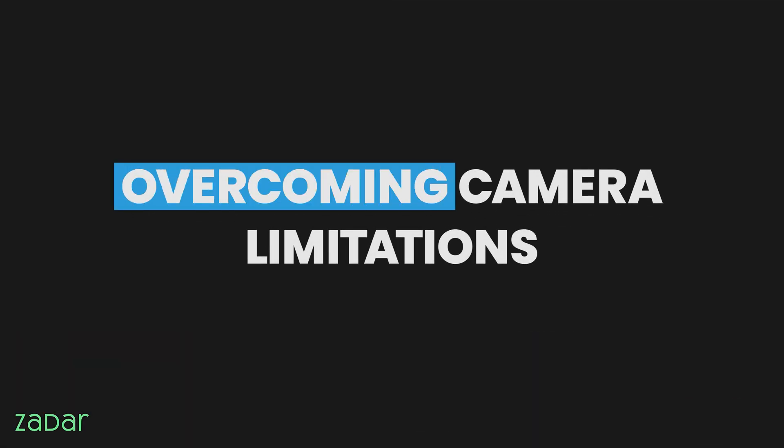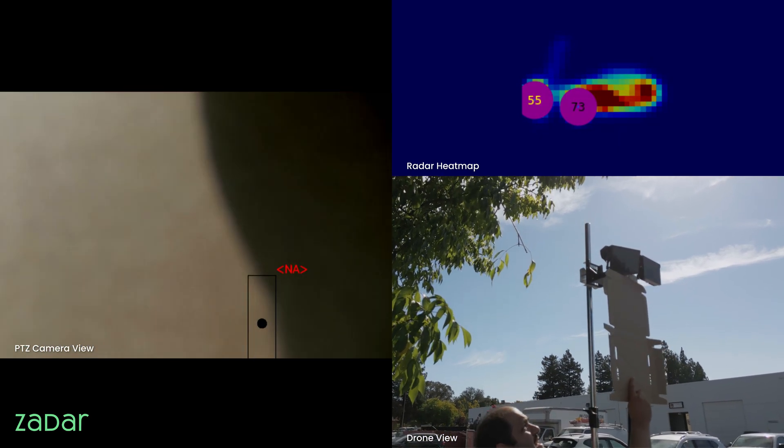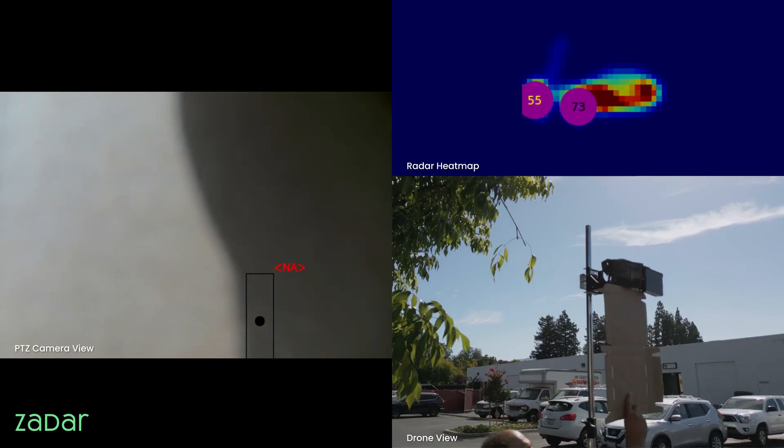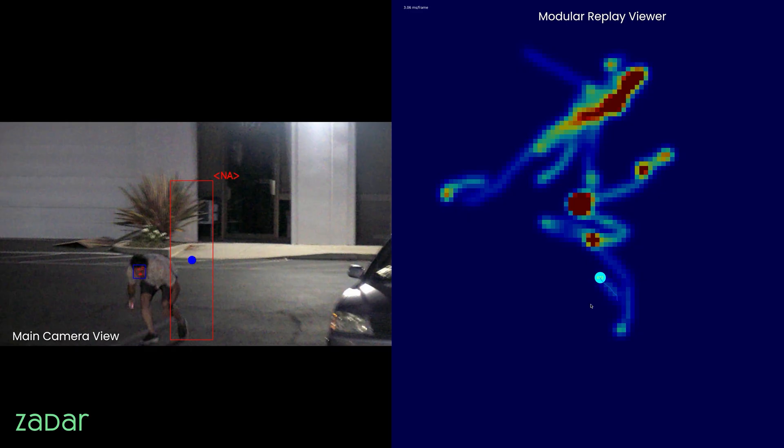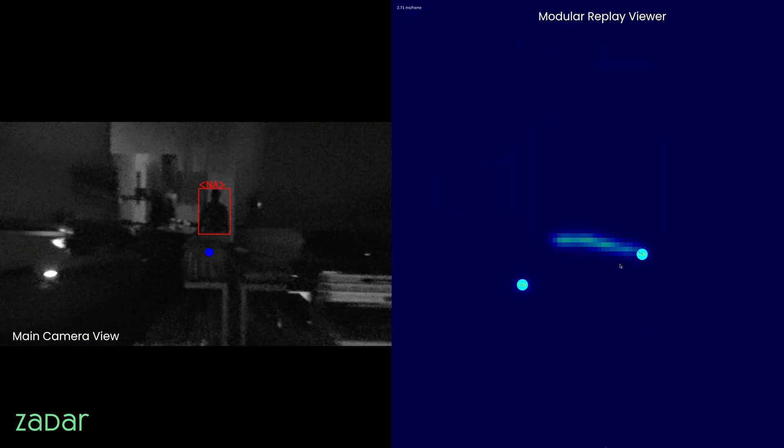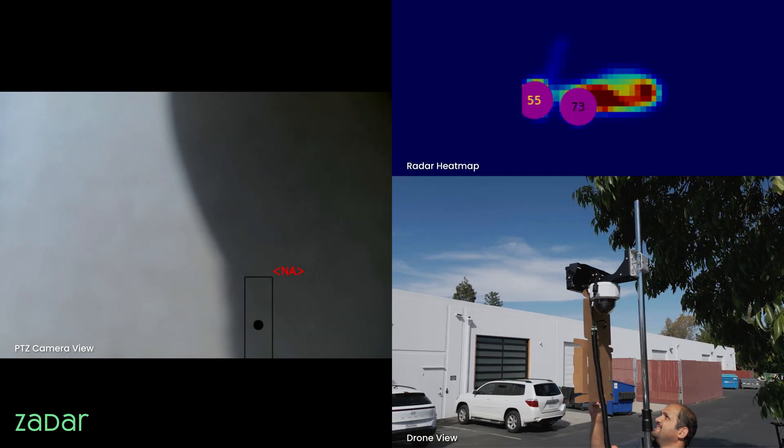Overcoming camera limitations. Where cameras lose clarity, Z-Prime extends reach. Z-Prime's radar technology detects tiny movements at long distances, then cameras are guided to zoom in for a detailed look. From a whisper of motion to a crystal clear view, no threat goes unseen.